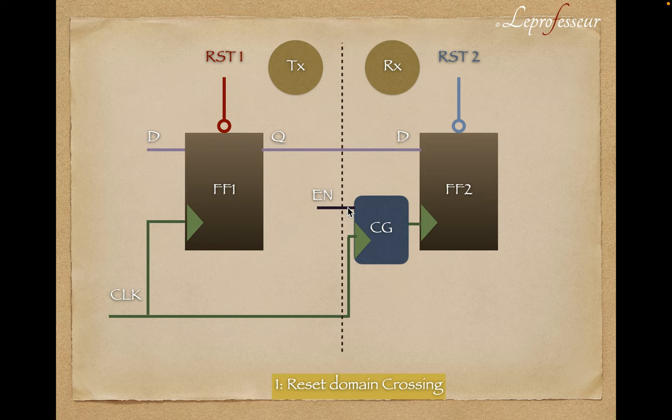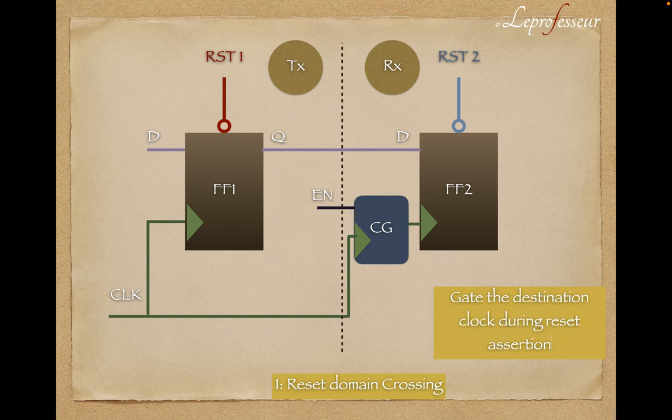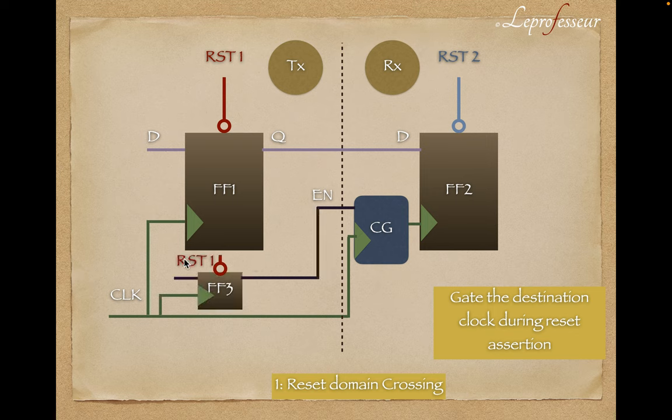We can have some sort of logic that generates an enable signal and that feeds to the reset generation logic as well. Very simple scenario. First step, we gate the clock to the destination flop or the RX flop. Second step is generate the enable signal. We can generate the enable signal in the TX domain getting the same reset one with some logic here, then pass it through connected to the clock gating cell pin.